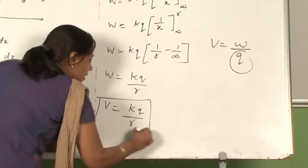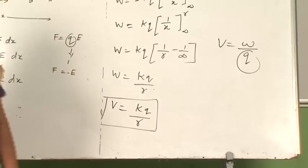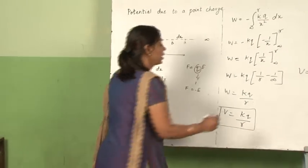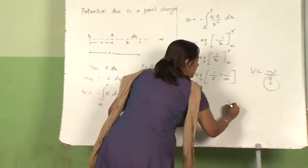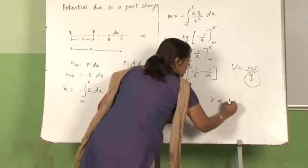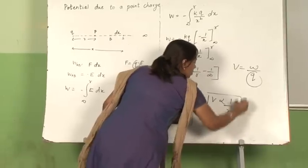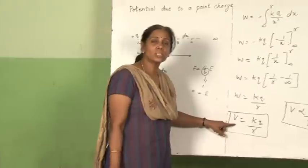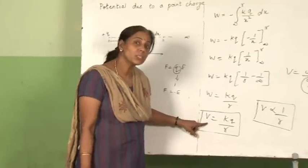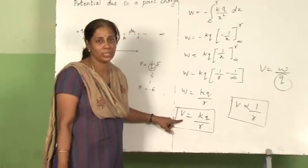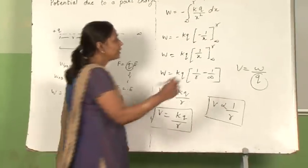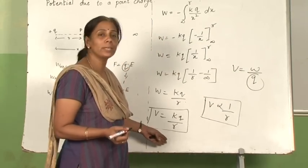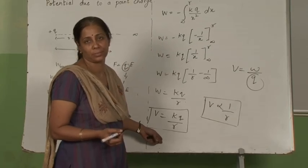So, this is the expression. You can also write k is equal to 1 upon 4 pi epsilon naught. So, we can say V is inversely proportional to the radius. This is called positive potential, and the negative potential will be minus of k q by r.